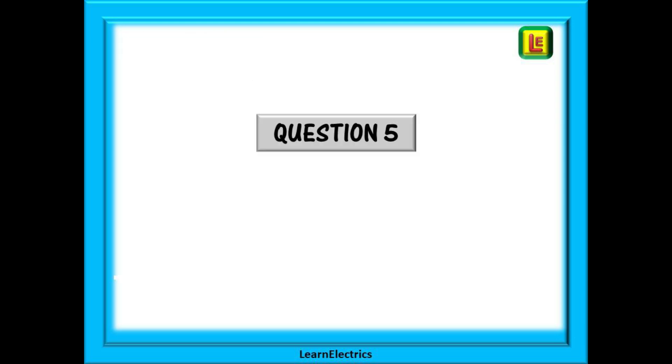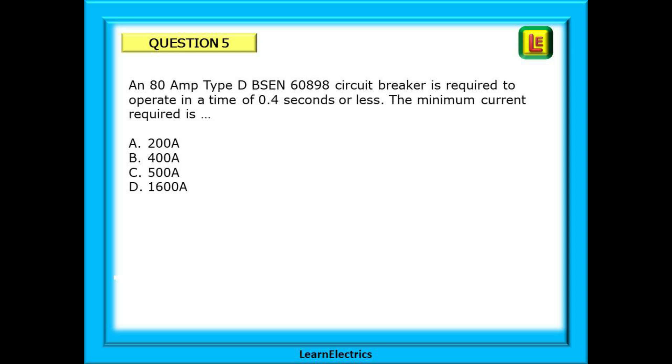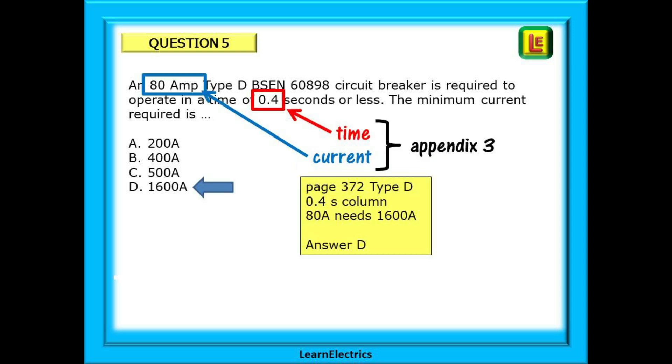Question 5 next. An 80-amp type D BS EN 60898 circuit breaker is required to operate in a time of 0.4 seconds or less. The minimum current required is... And you will need to go to Appendix 3 to find the answer to this question. Pause the video and find the answer. This question talks about time and current, so we need Appendix 3, the time and current characteristics. Find the 0.4 second column, find 80 amps and we have our answer, 1600 amps and answer D.